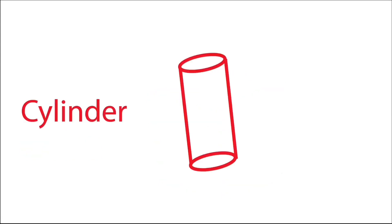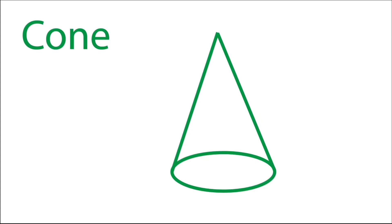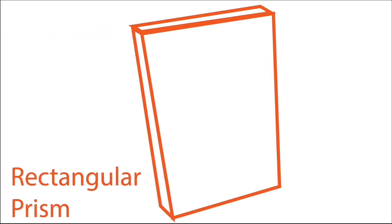The first 3D shape is a cube. Then we have a cylinder. Then we have a sphere. Then we have a cone. And last, we have a rectangular prism.